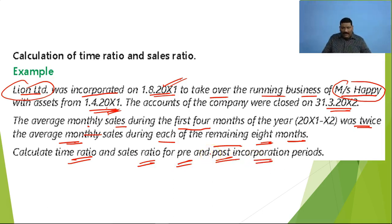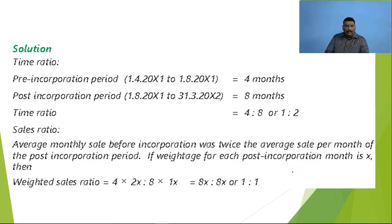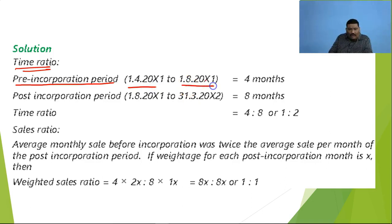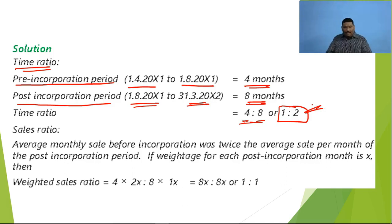This is our problem — we have to calculate time ratio and sales ratio. Our pre-incorporation period is from 1st of April to 1st of August, so this will be a time period of 4 months, and our post-incorporation period will start from 1st of August to 31st March, that will be an 8 month period. The ratio between 4 and 8 after simplifying is 1:2. This is our time ratio — very simple to calculate.